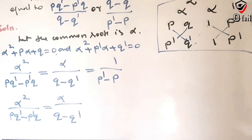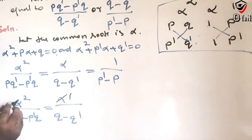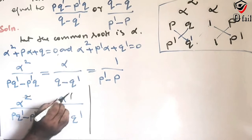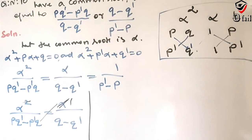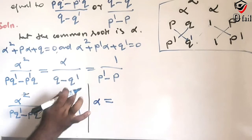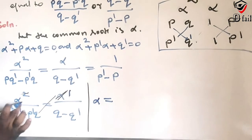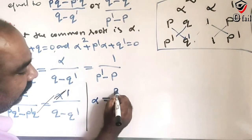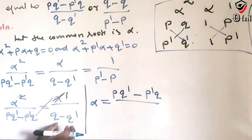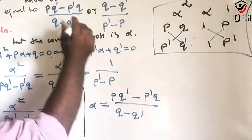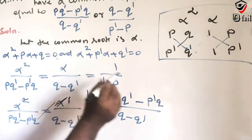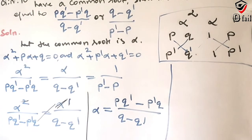From the cross multiplication: alpha² / (pq' − p'q) = alpha / (q − q') = 1 / (p' − p). Cancelling terms, we get alpha = (pq' − p'q) / (q − q'). This is the first answer.